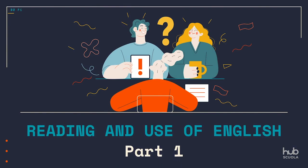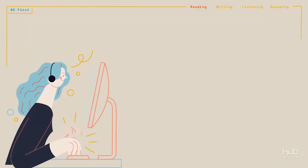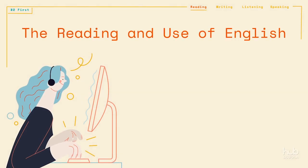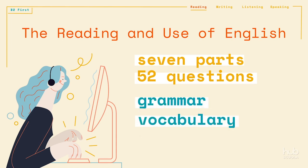Reading and Use of English, Part 1. The Reading and Use of English paper contains seven parts, which comprise 52 questions in total. The questions are designed to test grammar, vocabulary, and reading comprehension.